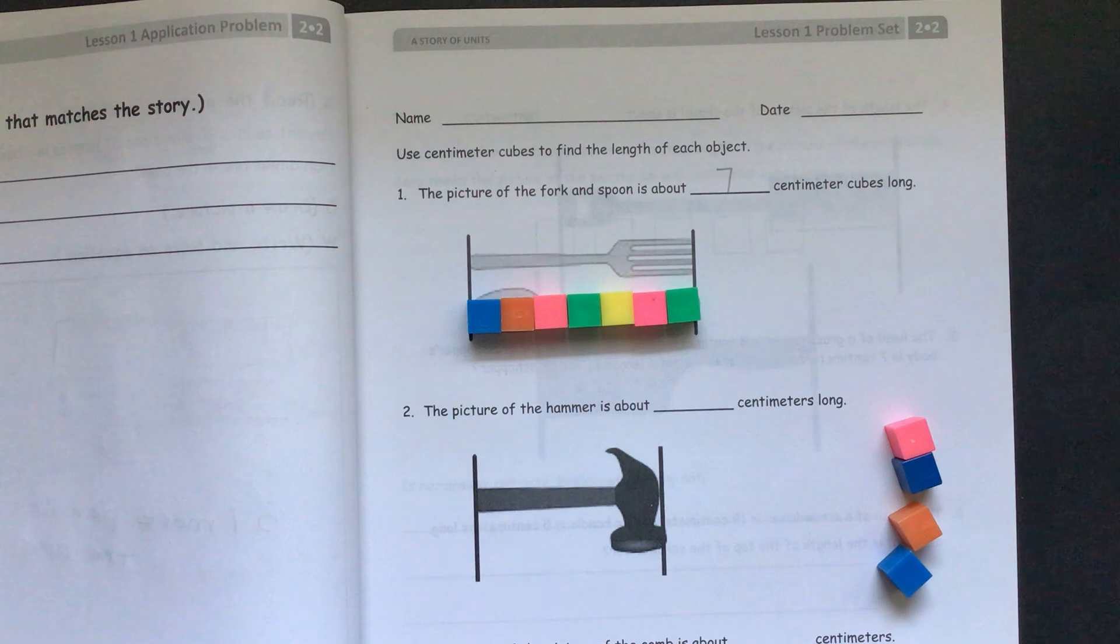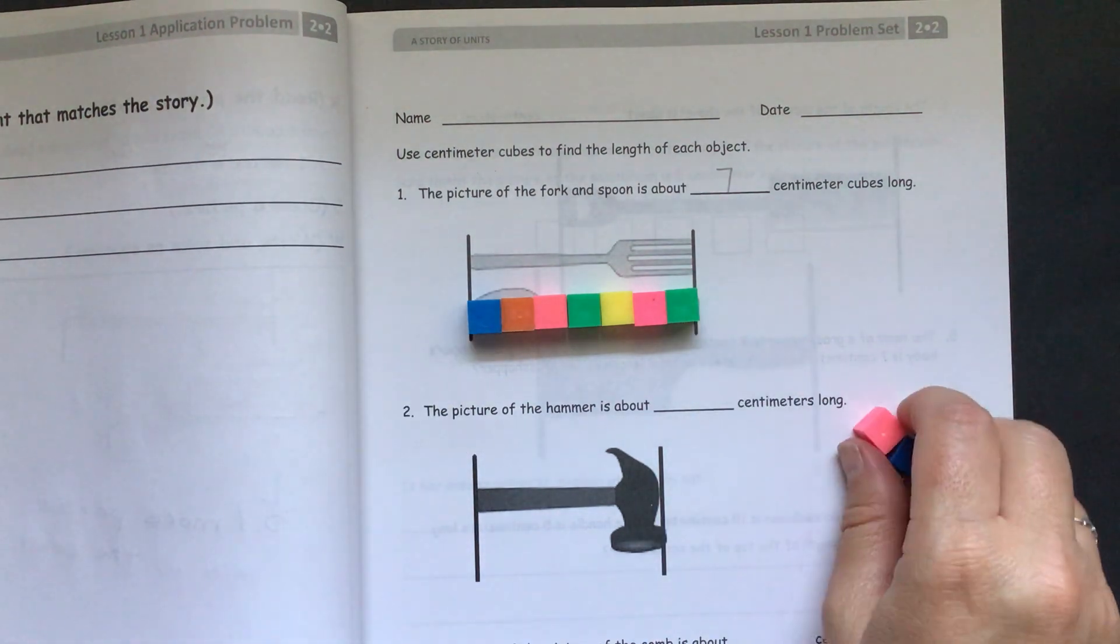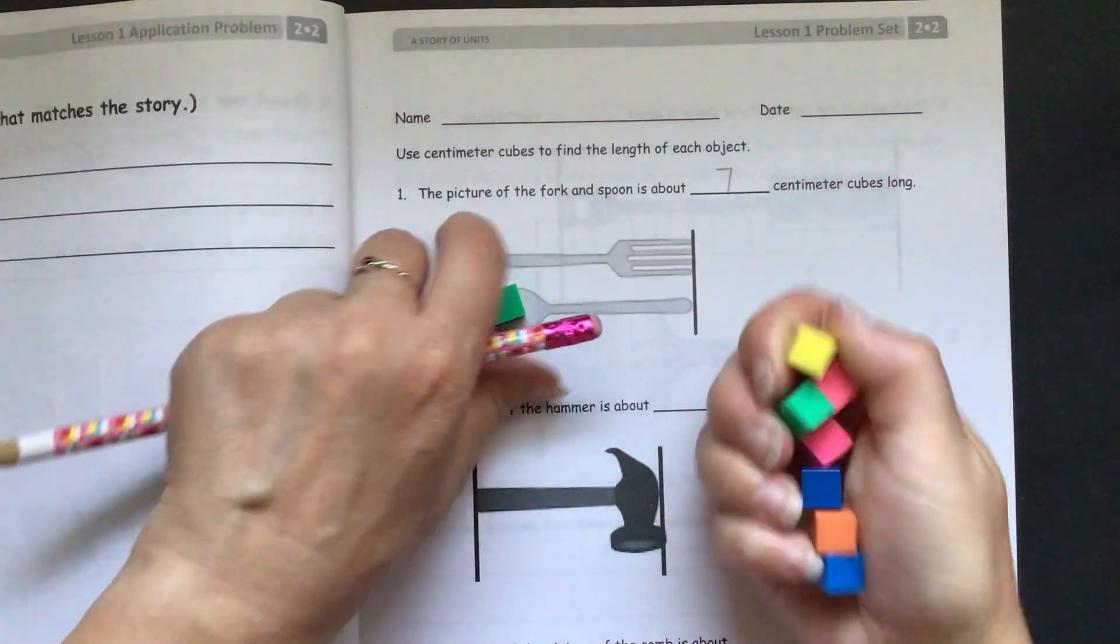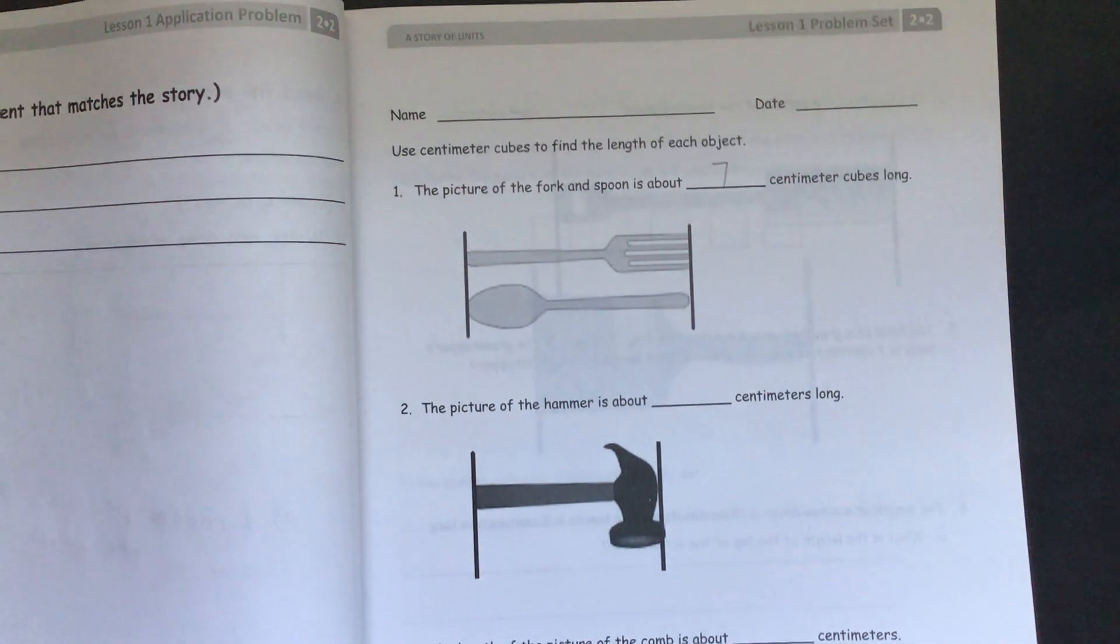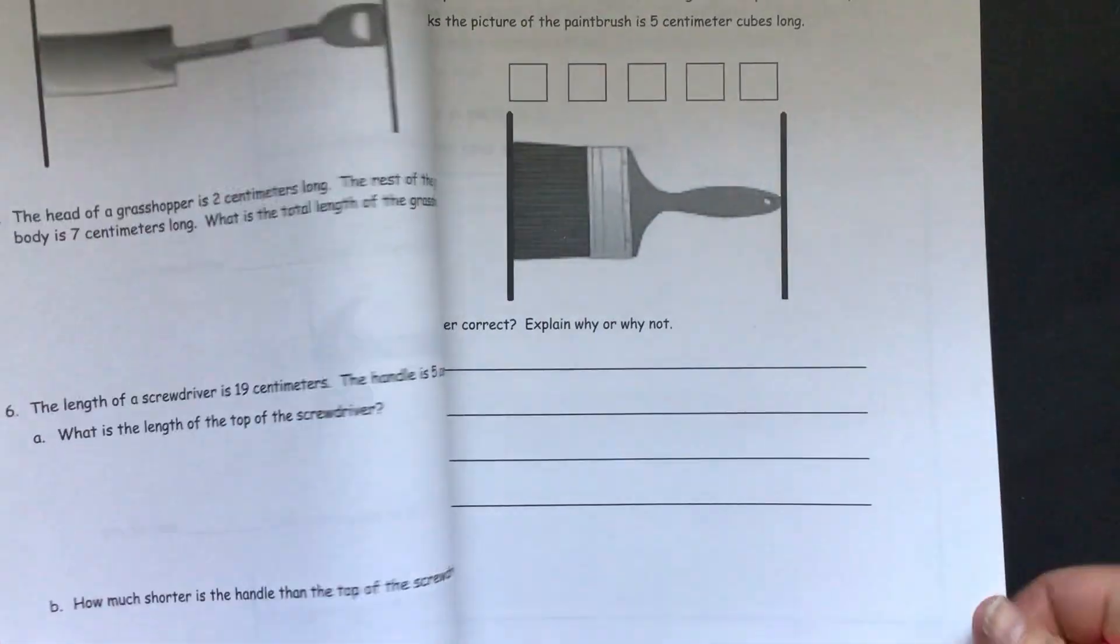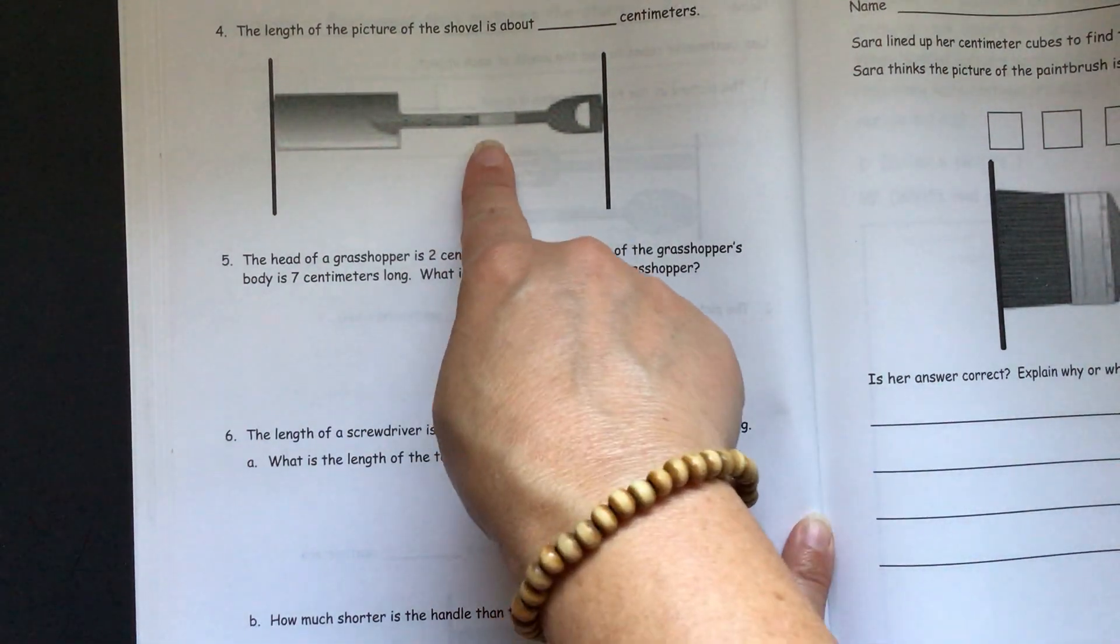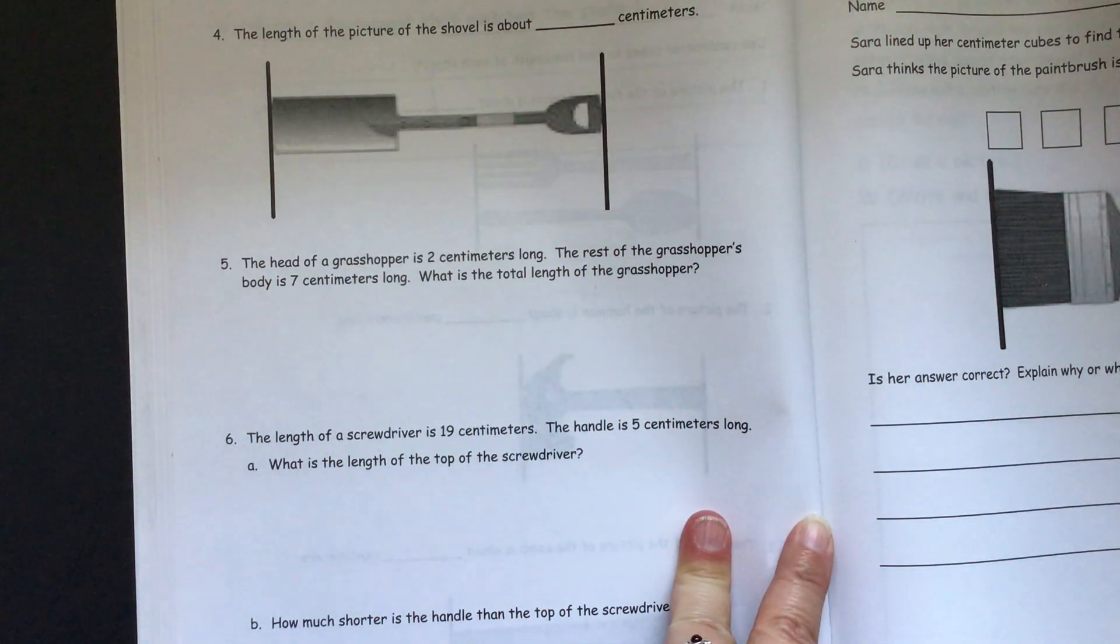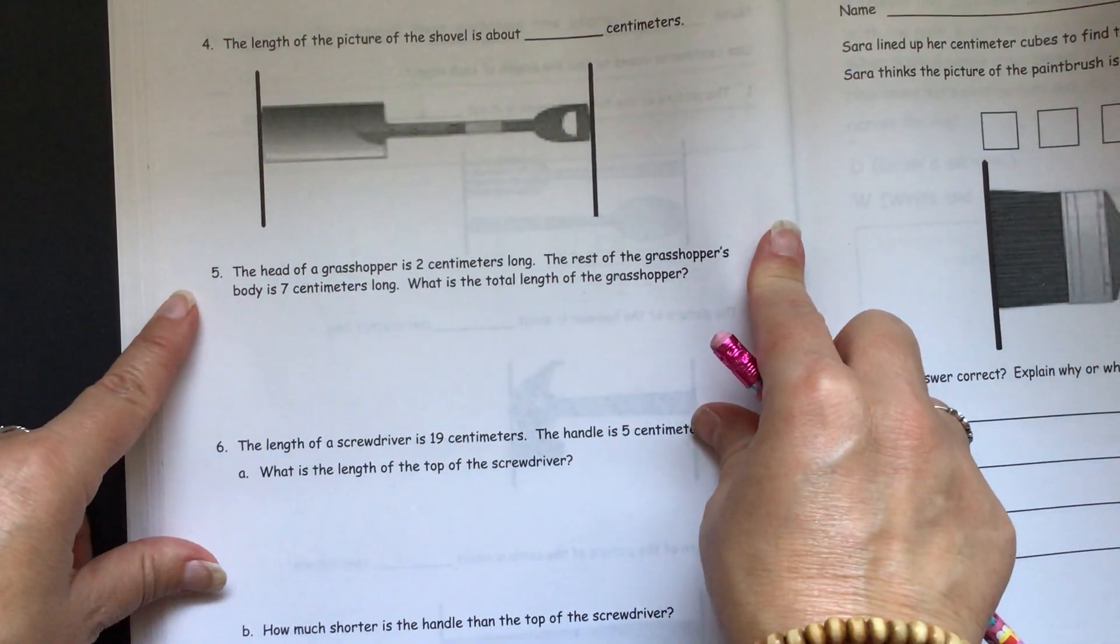So when you measure the hammer and the comb, you need to make sure you have them all touching each other. So we'll turn our page. I'll let you do the other two on this page on your own so you could get some practice there. And then we have a shovel for you to measure on this page. And then I am going to do number five with you.